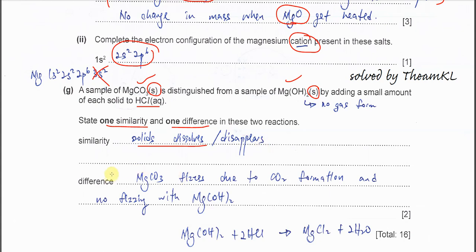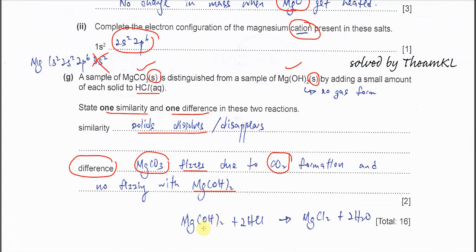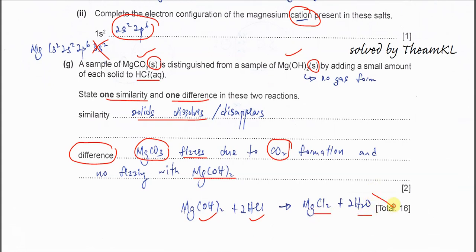And the difference is during the dissolution or during the reaction, you will see the magnesium carbonate has effervescence because it forms CO2 gas. Magnesium hydroxide with HCl, you won't see any gas formation because it's just a normal acid-base neutralization forming salt and water and no gas forms. So no effervescence for magnesium hydroxide with acid, but magnesium carbonate you see effervescence because of CO2 formation. That's the difference. That's all for this question.